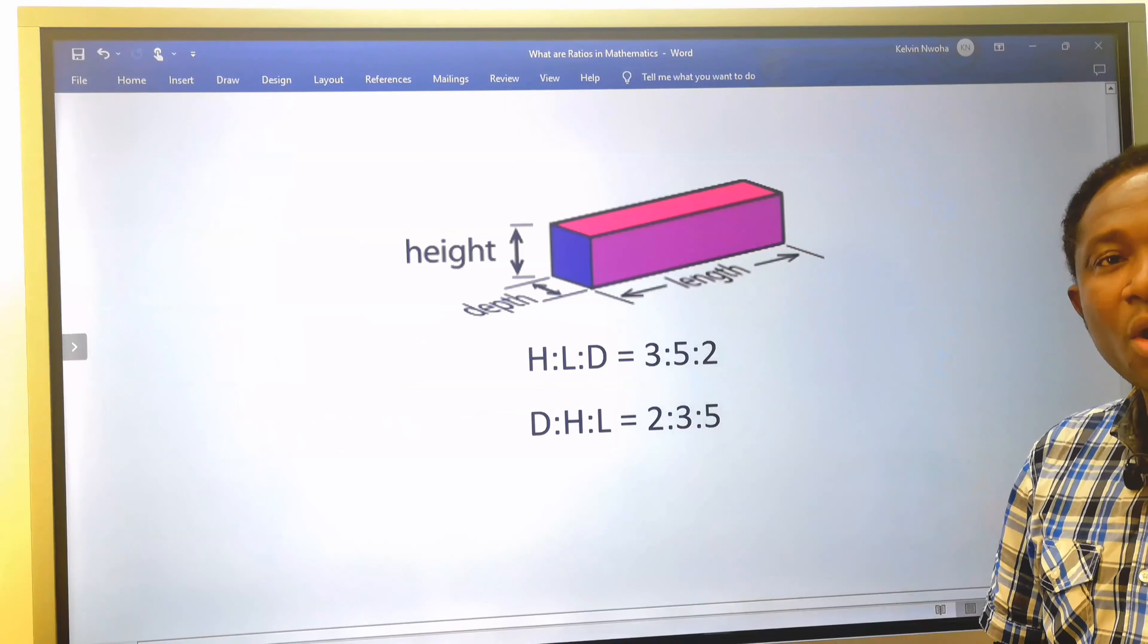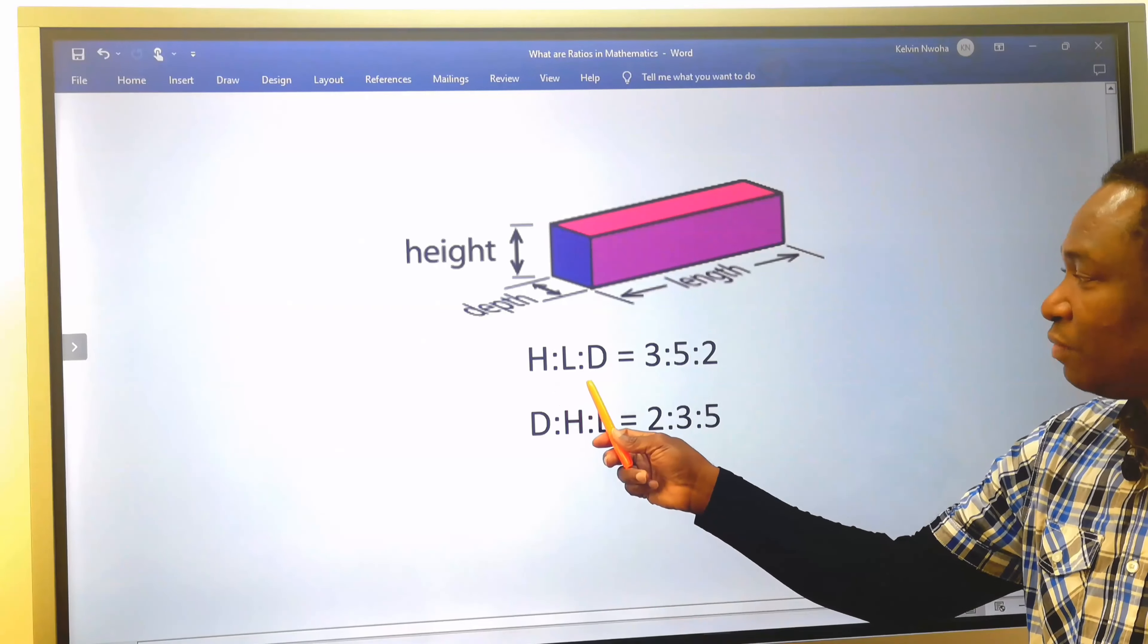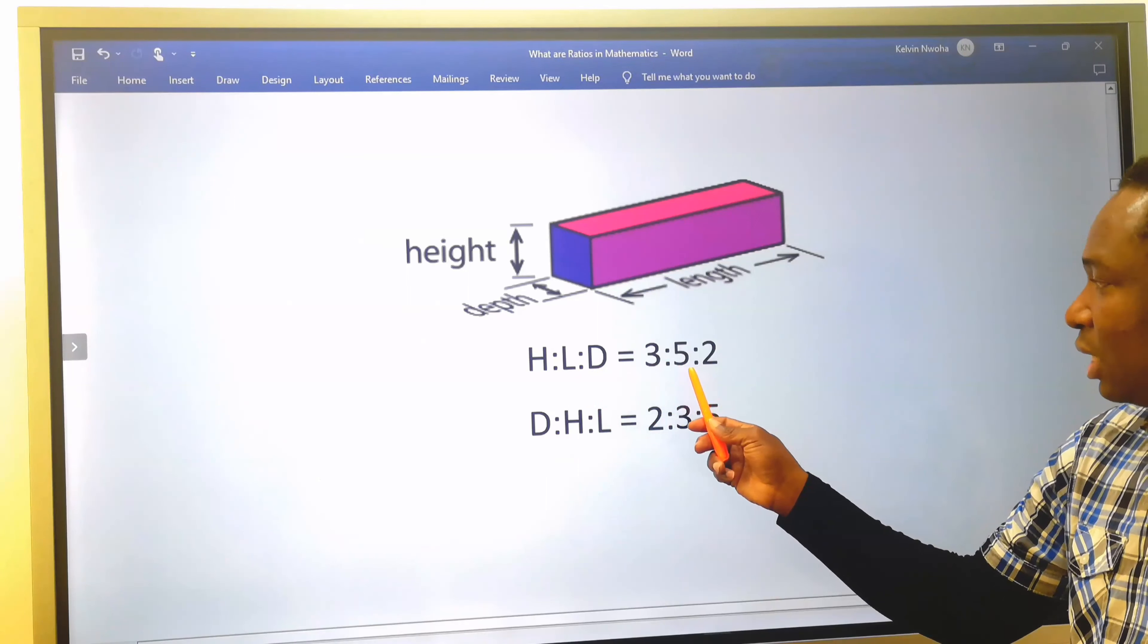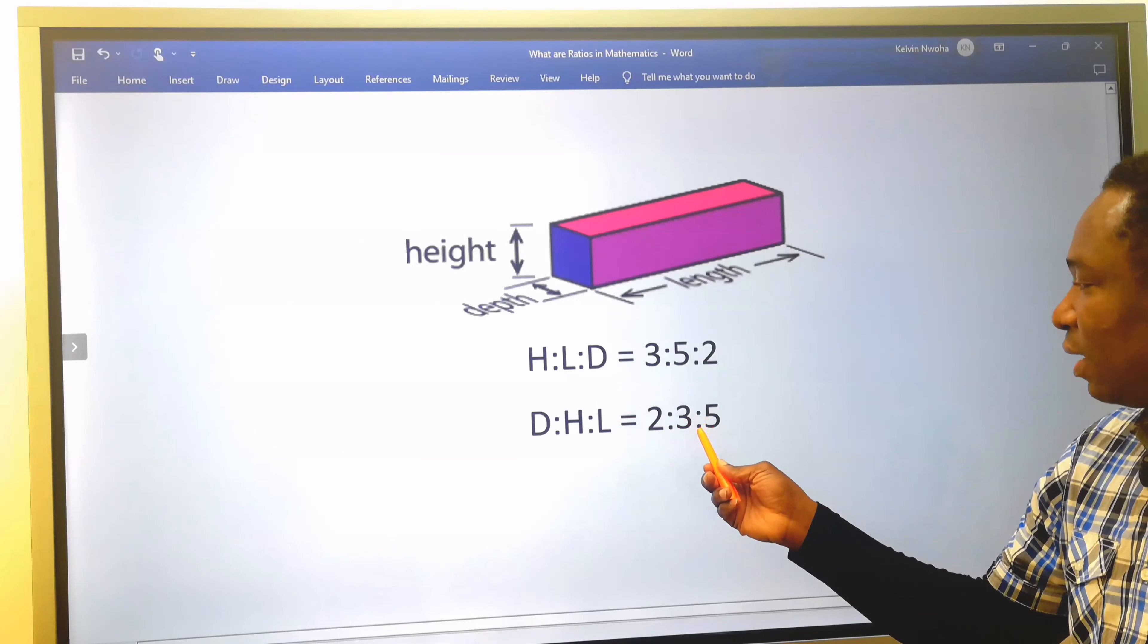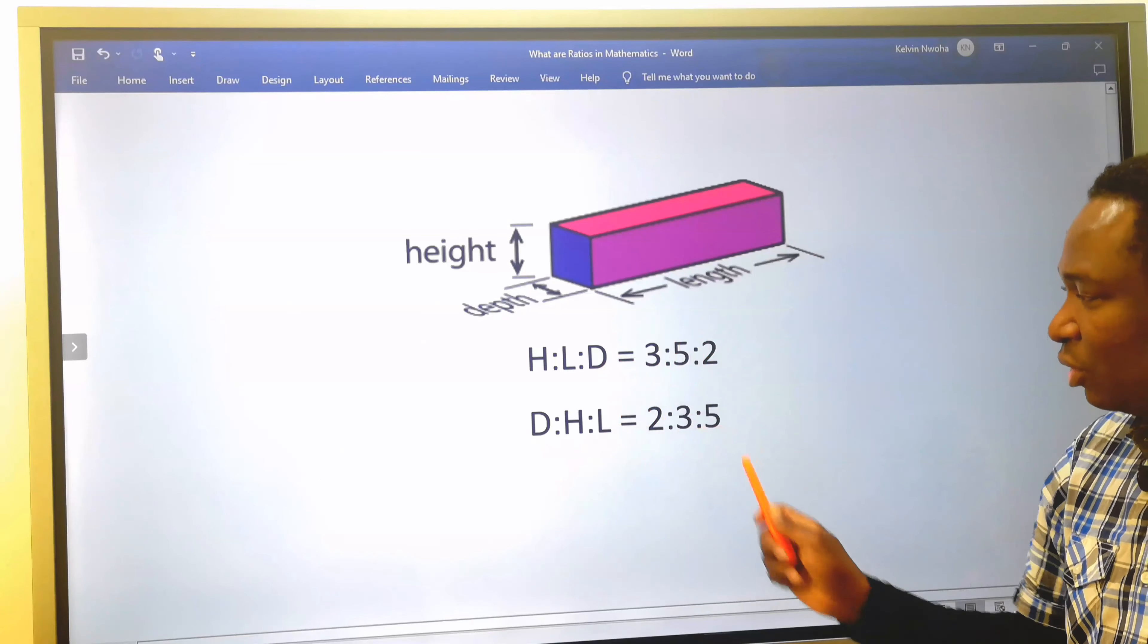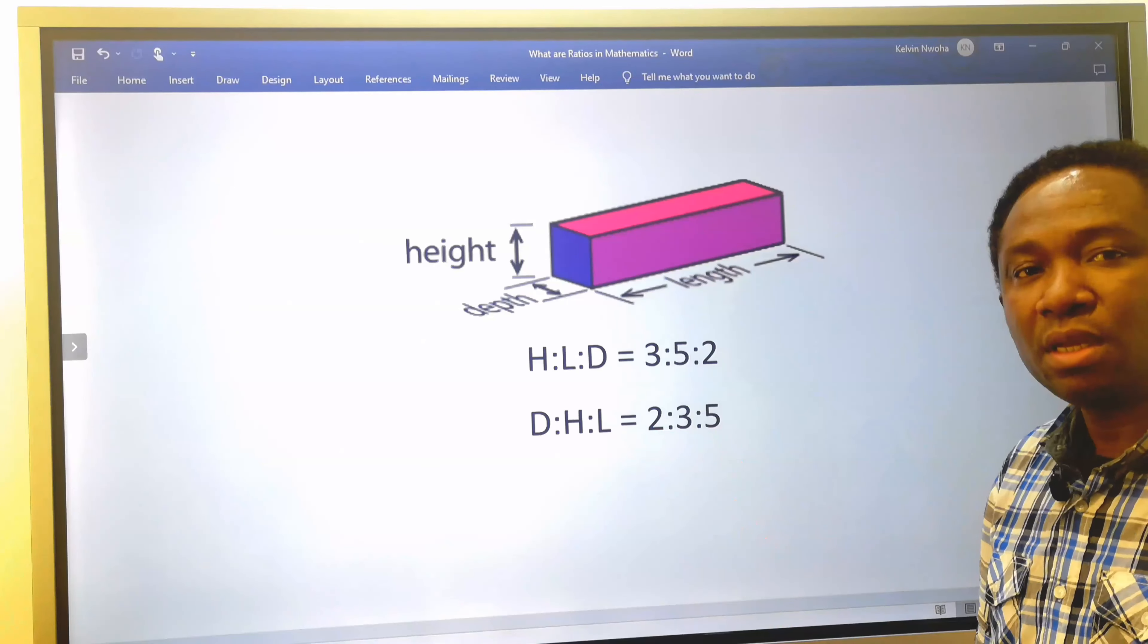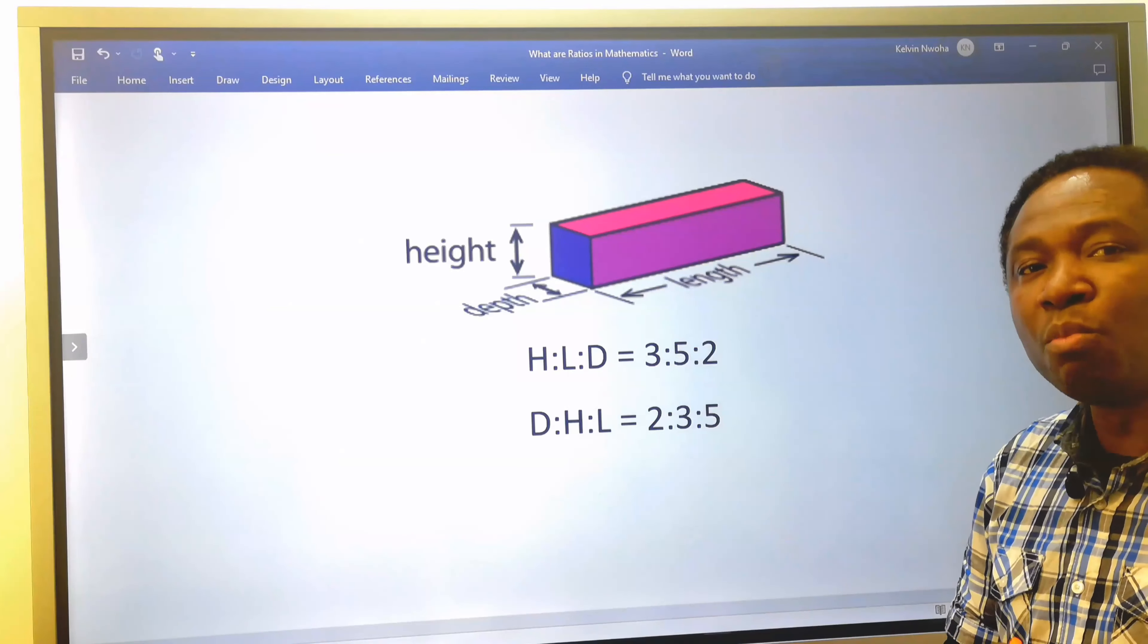Next, consider this cuboid or rectangular prism. This is the height to the ratio of the length to the ratio of the depth. The height will come first, which is three. The length will come in the middle and the depth will go to its position. Two comes before three and three comes before five. This ratio can be rearranged in this order for us to have the depth being two, the height being three, and the length being five. Anytime the name moves, the number corresponding to its position will move as well.